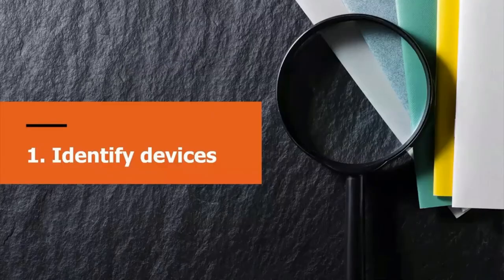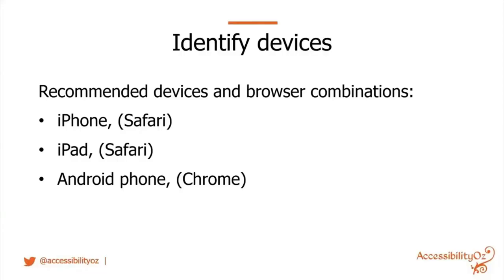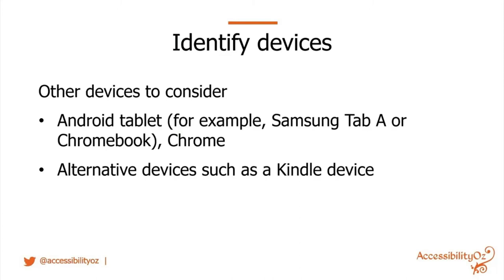The recommended devices and browser combinations are iPhone with Safari, iPad with Safari, and Android phone with Chrome. The documentation explains why we chose these and why we don't recommend Samsung Internet Browser. You should also consider testing with an Android tablet, especially for native apps, and with alternative devices such as a Kindle if you're testing an eBook.